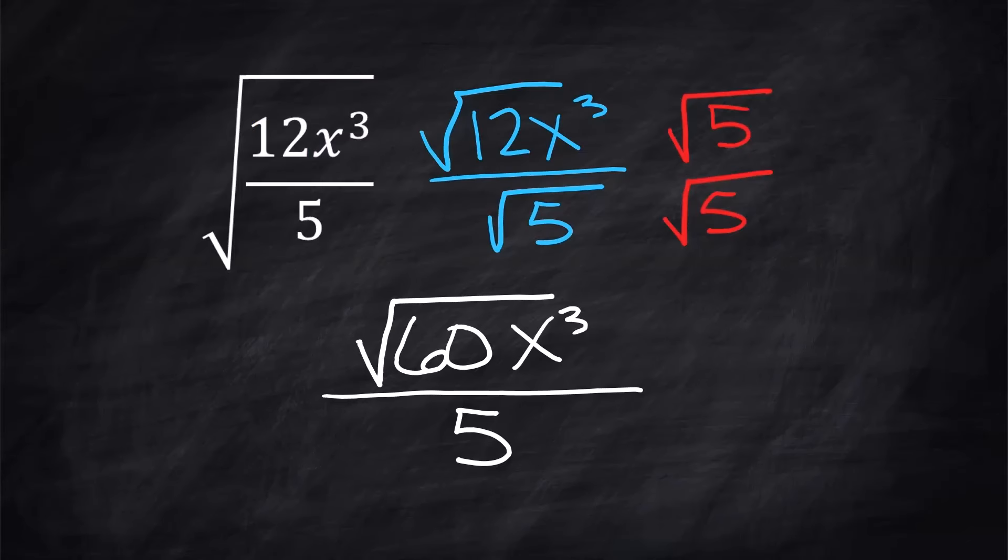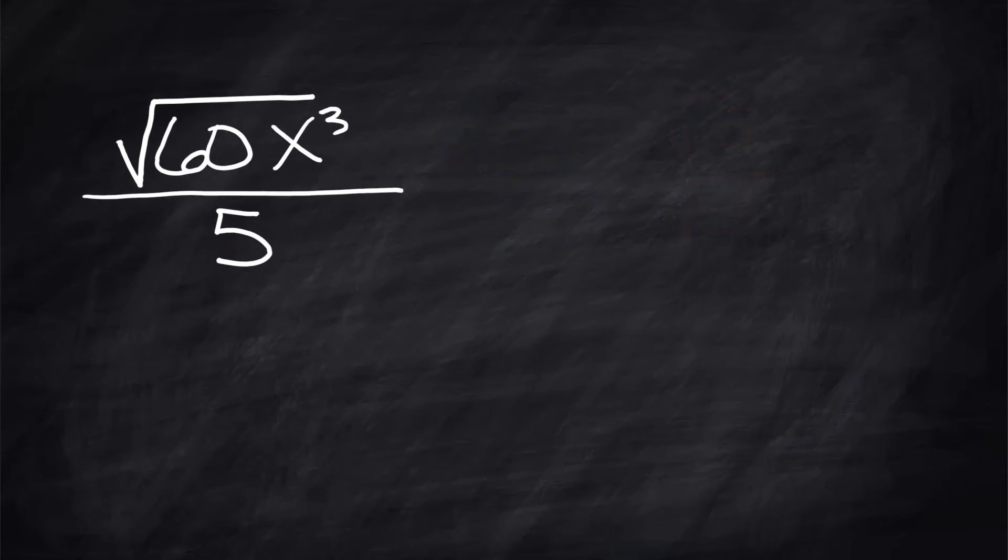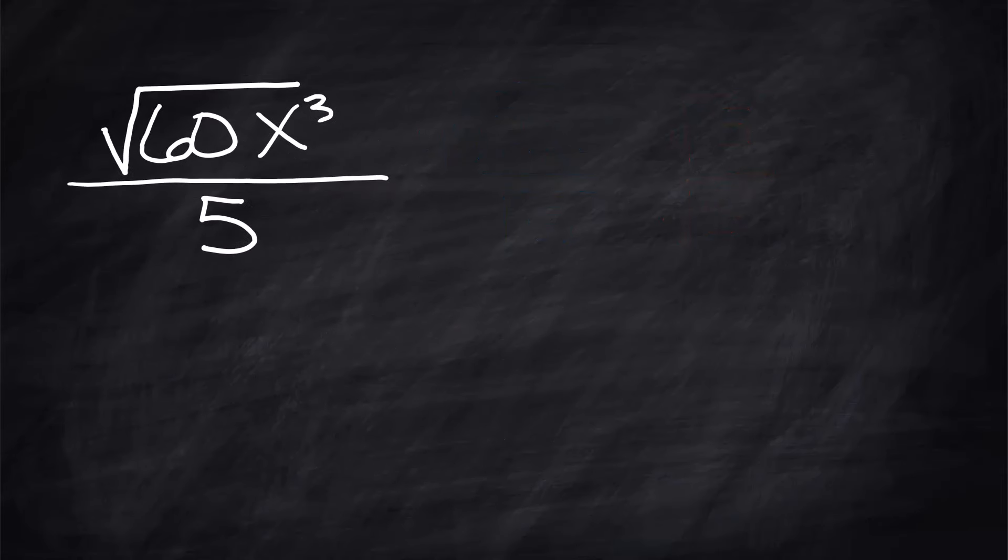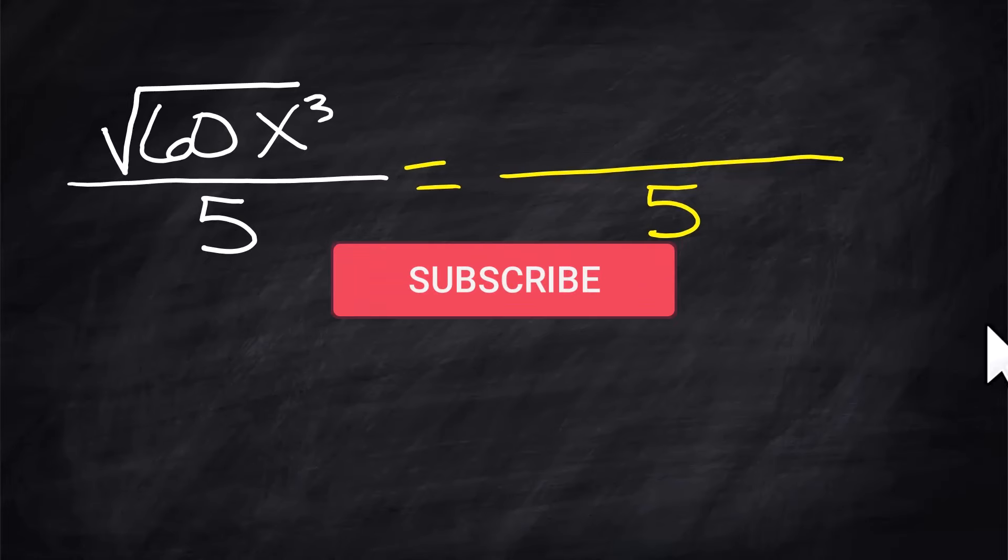you're going to get that wrong, because that numerator is not completely broken down. It's not a simplified radical. So there's a little bit more work to do here. You already accomplished the rationalizing the denominator part. That's beautiful.